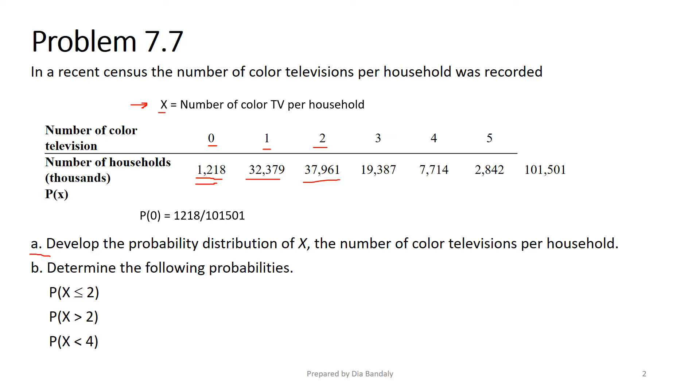So P(0) equals 1,218 divided by 101,501, which gives us 0.012. P(1) is 0.319. We find P(2), P(3), P(4), and P(5) in exactly the same manner. Now one thing I advise you: whenever you prepare a probability distribution and find all the probabilities for different values of X, make sure these sum up to 1. I did this check. This is very important to ensure you have an exhaustive list of values for your variable.